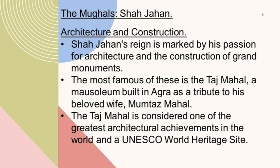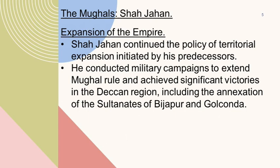Shah Jahan continued the policy of territorial expansion initiated by his predecessors. He conducted military campaigns to extend Mughal rule and achieved significant victories in the Deccan region, including the annexation of the Sultanates of Bijapur and Golconda.